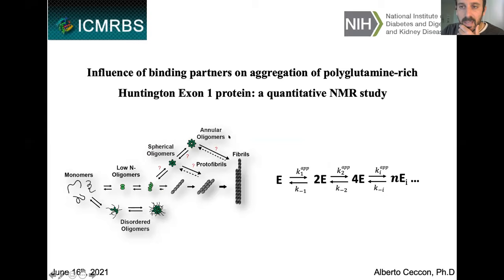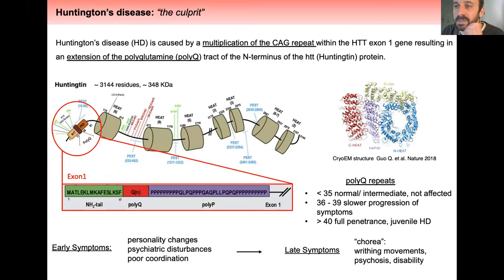Both studies deal with Huntington disease, specifically aggregation of the protein responsible for the pathology using NMR solution and mass spectroscopy. The culprit for this pathology is an extension of the huntingtin protein, an extension of the polyglutamine tract which you can clearly see here in red.